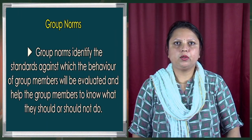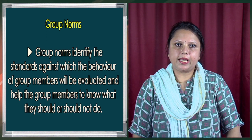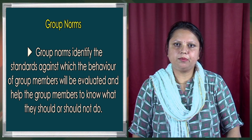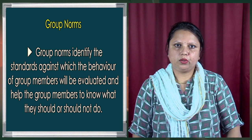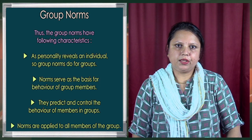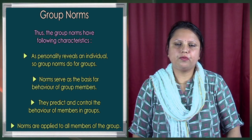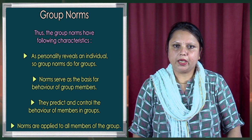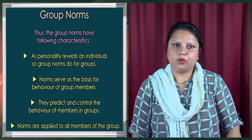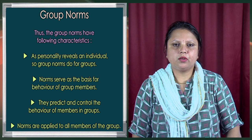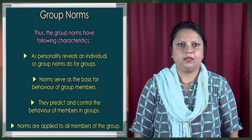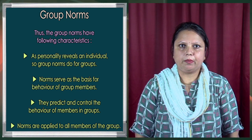Group norms identify the standards against which the behavior of group members will be evaluated and help group members know what they should or should not do. Just as personality reveals an individual, group norms do the same for groups. Norms serve as the basis for the behavior of group members — they predict and control the behavior of members in a group, and they are applied to all members of the group.